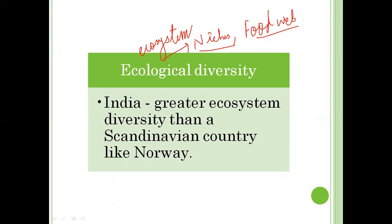Species diversity, ecosystem diversity, and genetic diversity are different things because they operate at different levels. India has a greater ecosystem diversity than a Scandinavian country like Norway. This is because India has a large number of ecosystems — for example, deserts, rainforests, mangroves, coral reefs, wetlands, estuaries, and alpine meadows — making India's ecological diversity far greater compared to small or Scandinavian countries like Norway.